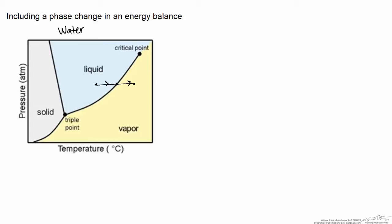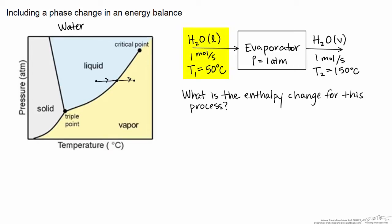What we're going to look at here is an evaporator. We have liquid water — one mole per second — going in at 50 degrees C. In the evaporator, it is heated and vaporized, and we have H₂O vapor that comes out at 150 degrees C. This process takes place at a constant pressure of one atmosphere.